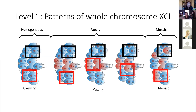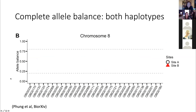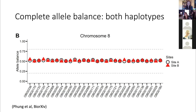To address this, we perform allele-specific expression analysis, looking at allele balance. As a proof of concept on chromosome 8 — an autosome — we expect to see 50% expression from mom and 50% from dad. If we don't, we've wasted $50,000. Thankfully, we see equal allele balance at both sampling sites: about half expression from mom's allele and half from dad's allele everywhere.